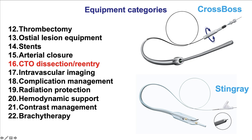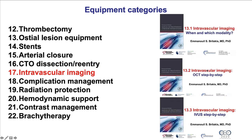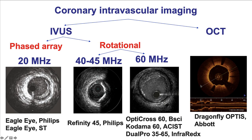Category number 16 is equipment specifically for CTO and dissection reentry — the CrossBoss and Stingray system. Category number 17 is intravascular imaging, which is very important for PCI and covered separately in three videos. Broadly there are two modes: optical coherence tomography and intravascular ultrasound. From IVUS, there are the rotational and phased array systems. The phased array systems have lower resolution but don't require preparation, while the rotational systems provide high resolution but do require preparation.